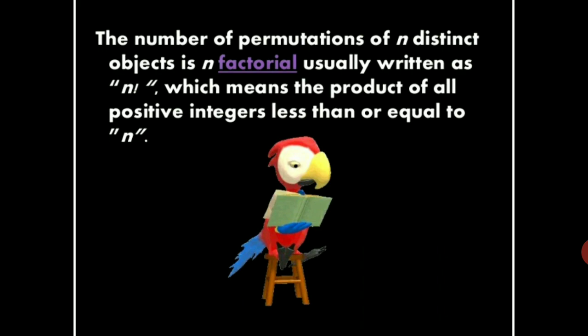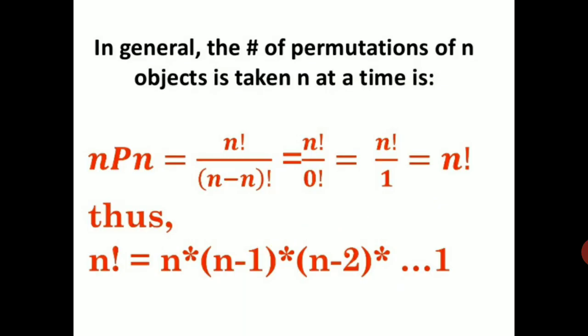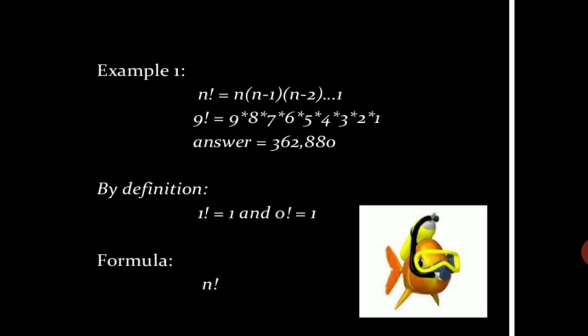Factorial means the product of all positive integers less than or equal to n, that is n factorial. Also, 1 factorial equals 1, and 0 factorial equals 1.